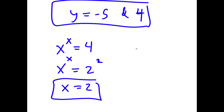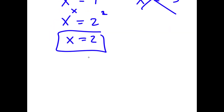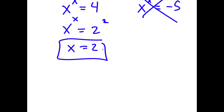For y equals negative 5: x to the power of x equals negative 5. You can't put negative 5 in the form of a number to the power of that same number, meaning this solution is invalid. So my only solution to this problem is x equals 2.